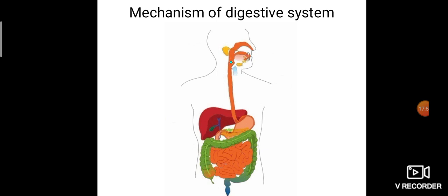Here you can see the mechanism shown in a GIF animation — the man is eating food. This is the total mechanism of the digestive system. Even though many organs are involved, digestion takes place mainly in three organs, and the remaining organs are just transporting organs. I will explain the mechanism behind the digestive system in detail.